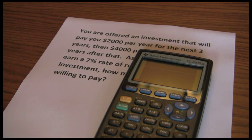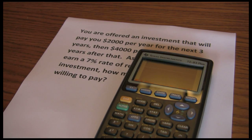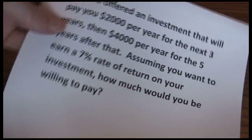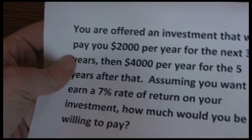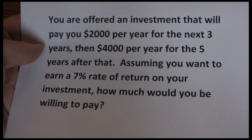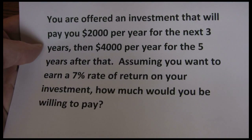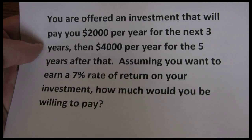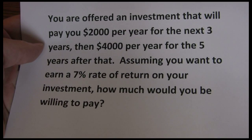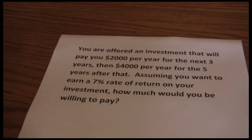In this video we're going to be using the cash flow worksheet on the TI-83 or TI-84 financial calculators. In our example, we're offered an investment that will pay $2,000 per year for the next three years and $4,000 per year for the five years after that. Assuming you want to earn a 7% rate of return, how much would you be willing to pay?